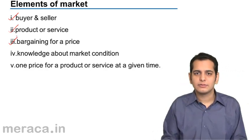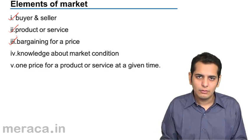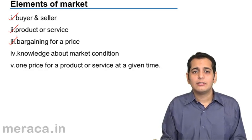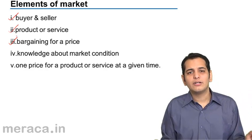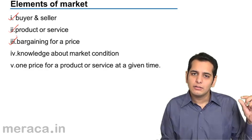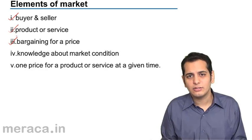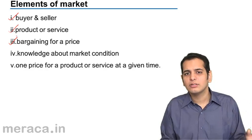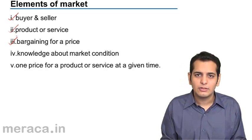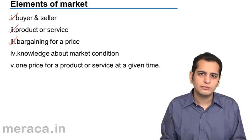Next, bargaining for a price. When we go to the market, we don't blindly purchase at whatever price tag is on the product — we tend to bargain for it. The consumer tries to get the best deal by minimizing the price, while the seller tries to maximize profits by charging a higher price. So there's a constant bargaining going on, and finally they settle at a price mutually agreeable to both, and thus the transaction happens.